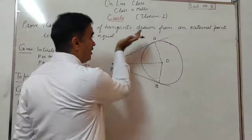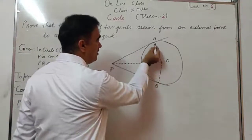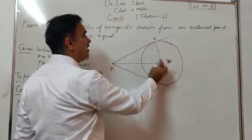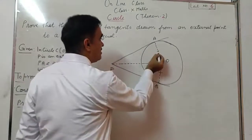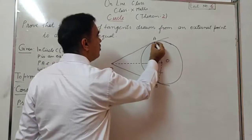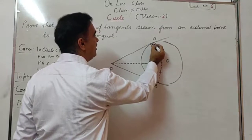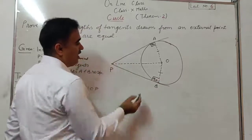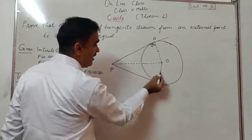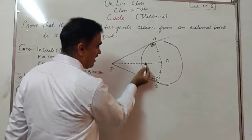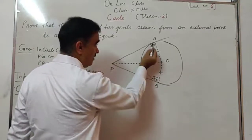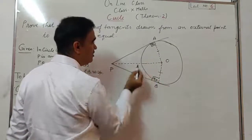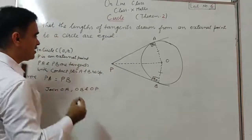Now for the proof: in the first theorem we discussed that this is a radius and this is a tangent at the contact point. The angle between them is 90 degrees. In a right triangle, the side opposite to 90 degrees is the hypotenuse. This hypotenuse OP is the same for both triangles.